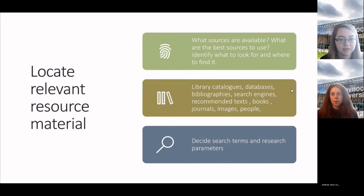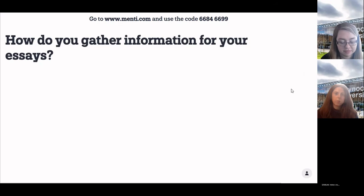Locating relevant resource material which is a whole other minefield in itself. What sources are available? What are the best sources to use? Identify what to look for and where to find it. You can look at library catalogues, databases, bibliographies which is the part I was talking about earlier. Then search engines, recommended texts, books, journals, images, people, so many places you can find information. You have to decide search terms and research parameters. How do you gather information for your essays? What do you guys do now? What's your general approach?